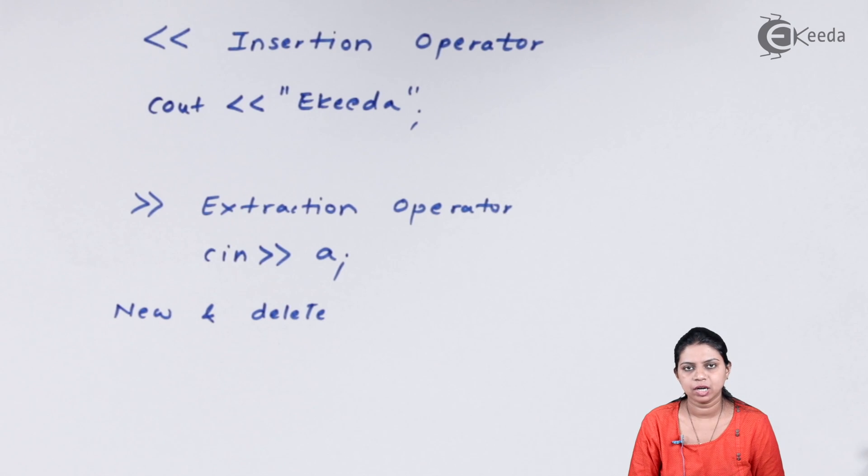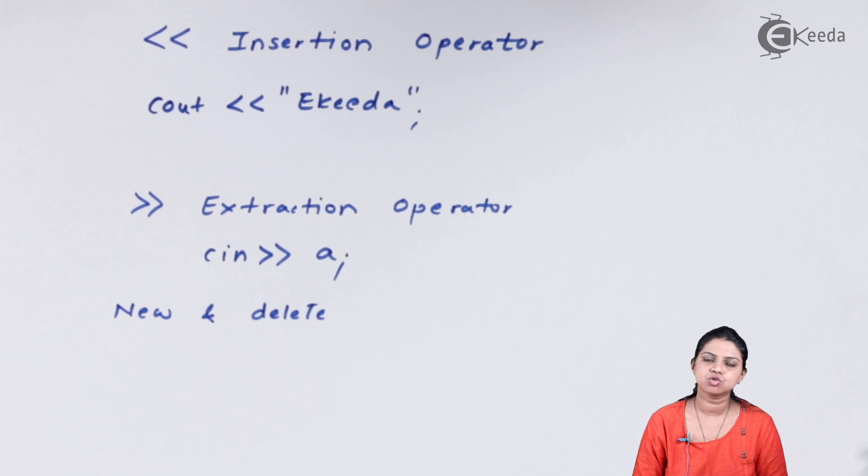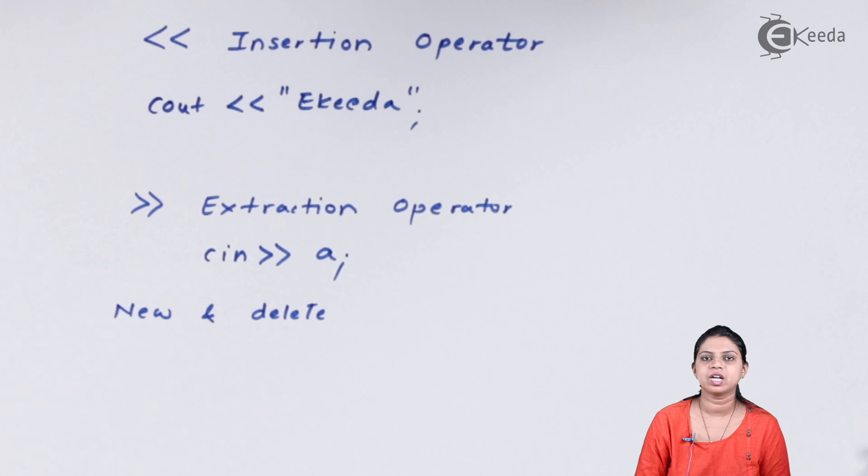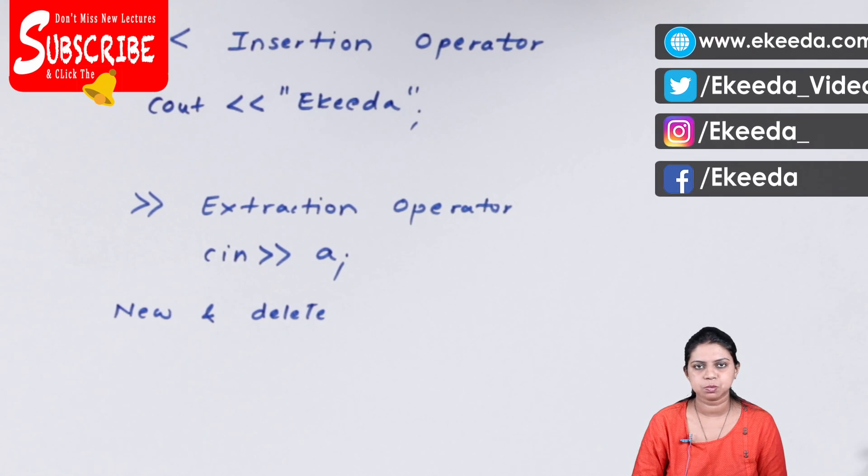The last two operators are called new and delete operators. They are called memory management operators. The new operator is basically used to allocate memory whereas the delete operator is basically used to deallocate memory. This was all about the special operators of C++.